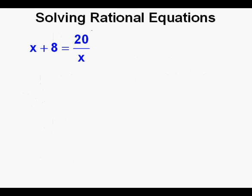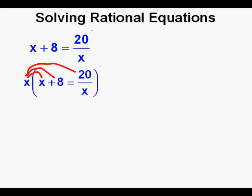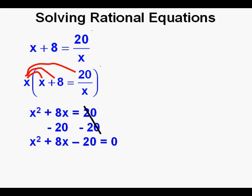Now our next problem: x plus 8 equals 20 over x. Just as we did in our last problem, we will rationalize it — or get the unknowns out of the denominator — by multiplying the equation by x. We apply the distributive property and multiply x by each term inside the parentheses, and this becomes x squared plus 8x equals 20. This is now a quadratic equation. We'll try to solve by factoring, first subtracting 20 from both sides of the equation. So we're left with x squared plus 8x minus 20 equals 0.